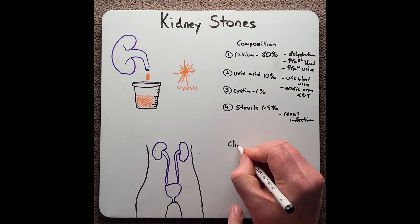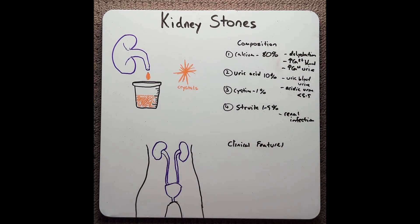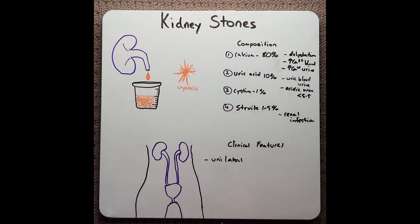Finally, clinical features that are associated with kidney stones. Unilateral, so 80% of kidney stones will be on one side of the urinary tract.